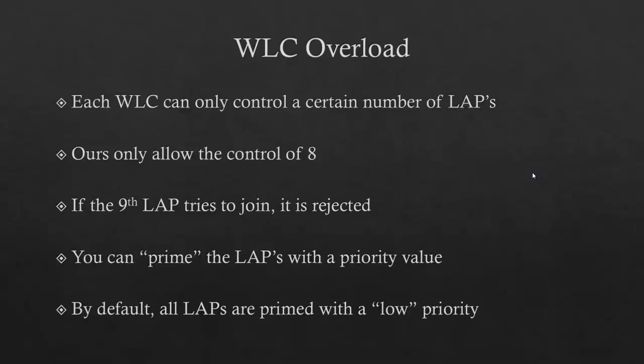Wireless LAN controllers can overload — each one can only control a certain number of lightweight access points. The 2106 we use in class can only control eight access points; when the ninth tries to join, it's rejected. You can prime lightweight access points with a priority value — by default they're set to low, but you can set them to low, medium, or high. So you set your eight primary access points to high priority and backup ones to low. Once one of the eight dies, the low priority one jumps in and joins the wireless LAN controller.